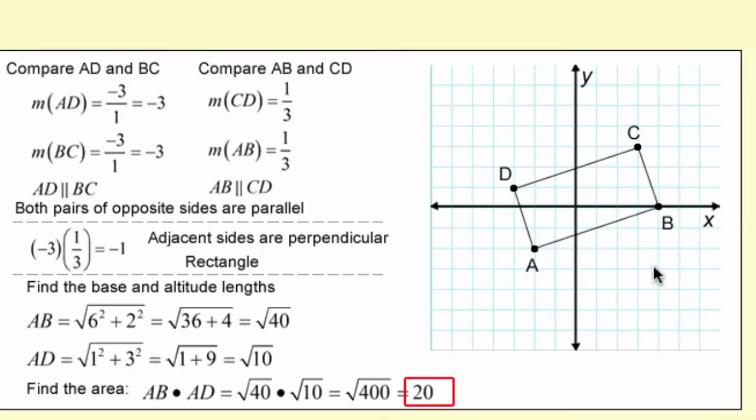If you have a quadrilateral you need to classify it first before you can figure out how to calculate the area. So in this case both pairs of opposite sides are found to be parallel and then it's classified as a parallelogram. So then you can just find the base length and then the height and multiply those, and you can get your area that way. And this one worked out to be exactly 20.